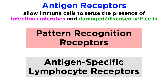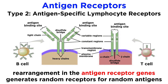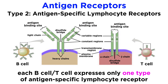Unlike pattern recognition receptors, which are germline-encoded and encompass a broad range of antigens, antigen-specific lymphocyte receptors, as their name implies, are extremely specific. Each individual B and T cell goes through a process of genetic rearrangement in their antigen receptor genes to randomly generate receptors that could recognize any type of antigen. Because of this genetic rearrangement, each B and T cell only expresses one type of antigen-specific lymphocyte receptor, making each cell a specialist for a different antigen.